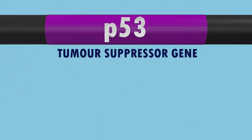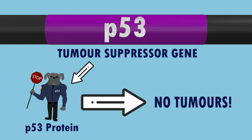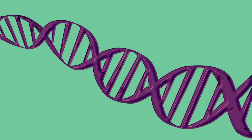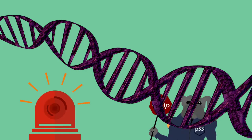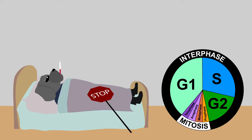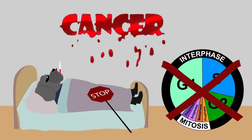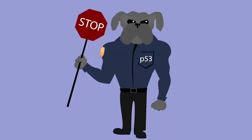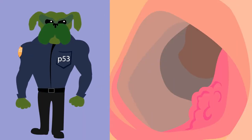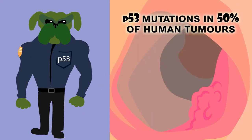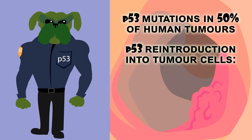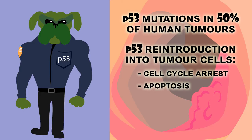P53 is a tumor suppressor gene, so its actions prevent tumors from forming. P53 is called to action when there is DNA damage, and its malfunction can lead to cancer through the loss of regulation of the cell cycle. Mutations in P53 underlie 50% of all human tumors, and its reintroduction into tumor cells results in cell cycle arrest or apoptosis.